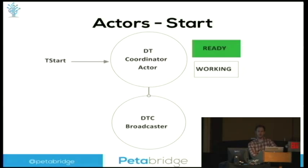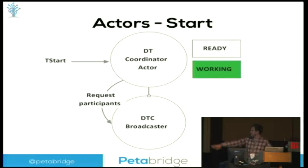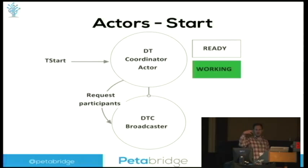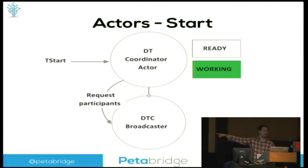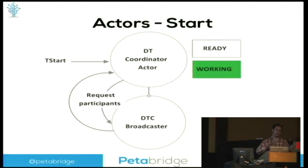Let's go through what it actually looks like in your code when this process begins. The start message comes into the coordinator — he's in a ready state and he's going to flip into a working state. This DTC broadcaster is essentially an endpoint local to the machine. If I'm on node A, this is node A's local endpoint that remotely lets him talk to all of his peers, so he doesn't have to know where they are. He just knows about his local handle to them, which is this broadcaster. He's going to send a message to the broadcaster saying, who are my peers? The broadcaster's going to send them back, and now he knows who his peers are, how many there are, and what addresses they're at. If another node joined the cluster during the process of this transaction and tried to join in, he can ignore that.